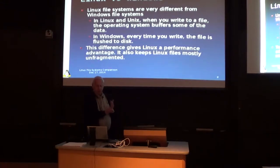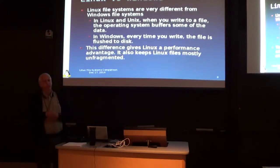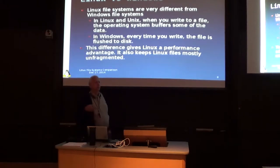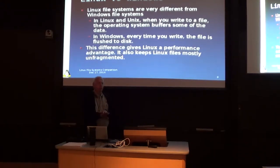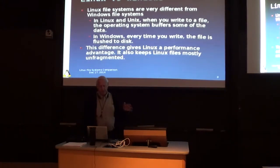In Windows, every time you write to a file, the block is written to disk — the operating system does not inherently buffer it. There are some things like C language file I/O library functions that have a little buffering, and of course disks can have cache firmware. But generally in Windows, when the program says to write a block, it's going to be written almost immediately, making it a little bit slower than Linux. This buffering gives Linux a performance advantage in file operations.